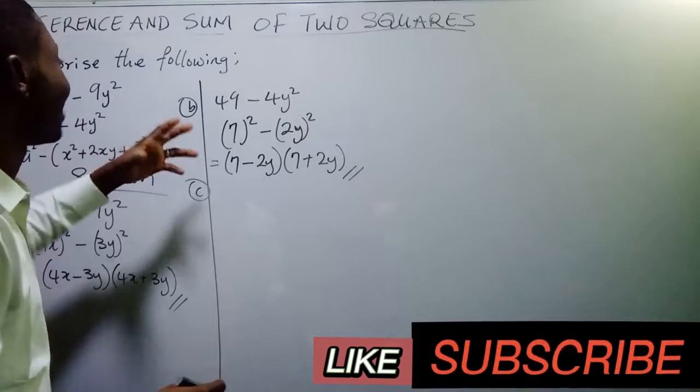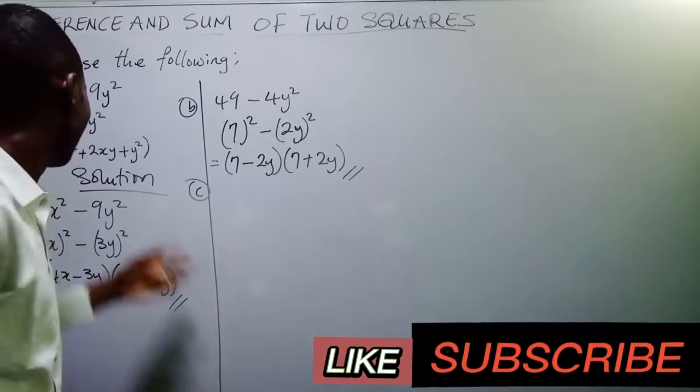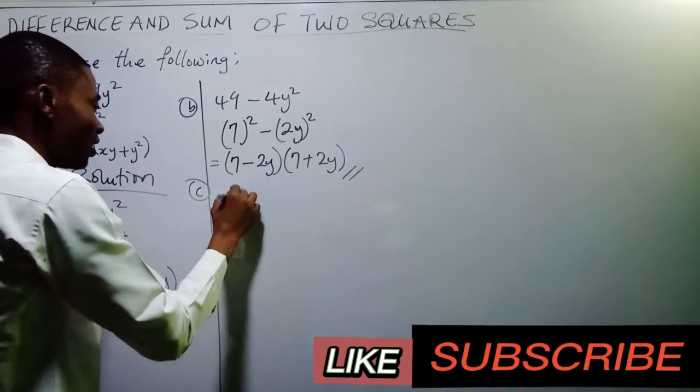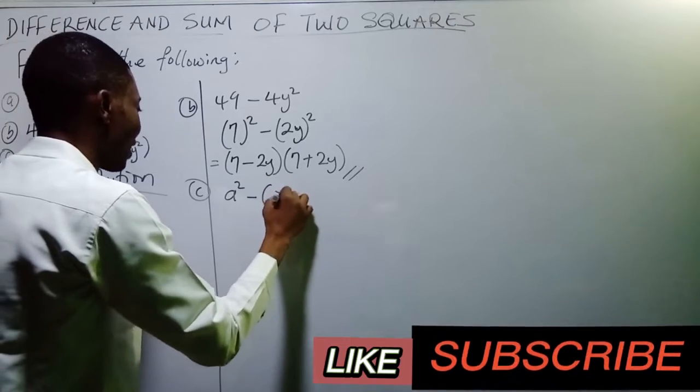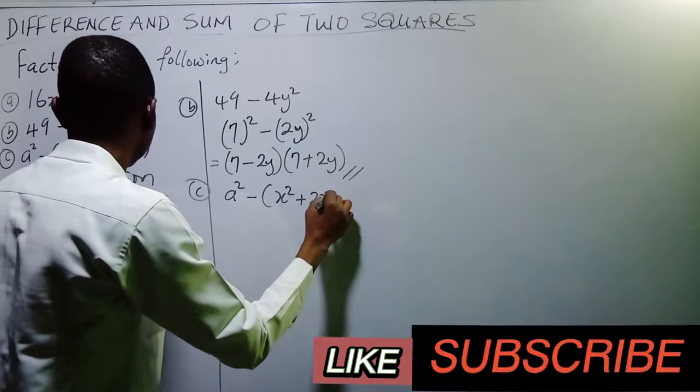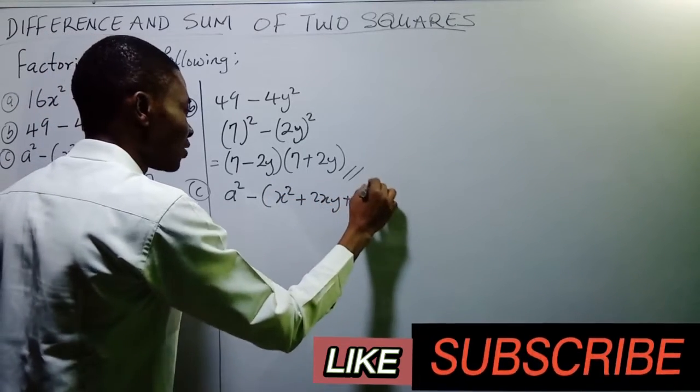Factorization is actually very simple. Now, let's look at the last one. a square minus open bracket x square plus 2xy plus y square.